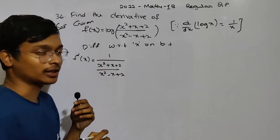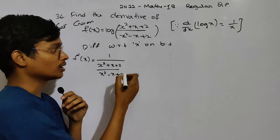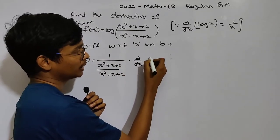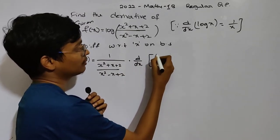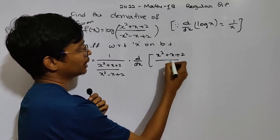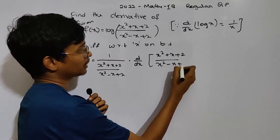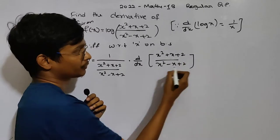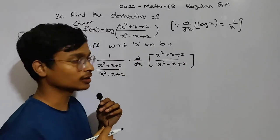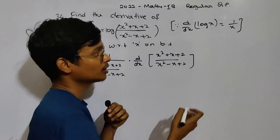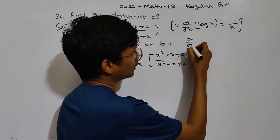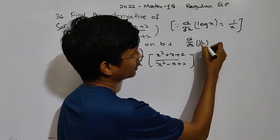Now, let's differentiate the inner fraction. So, this would be equal to d by dx of u by v, applying the quotient rule.